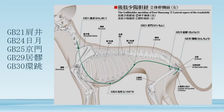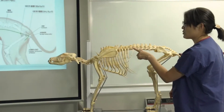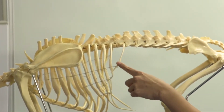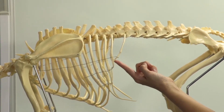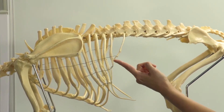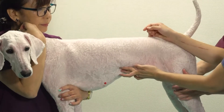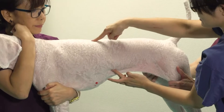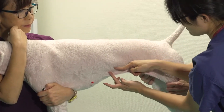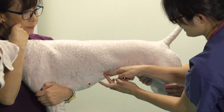GB25 is at the tip of the 13th rib, at the tip of the last rib.